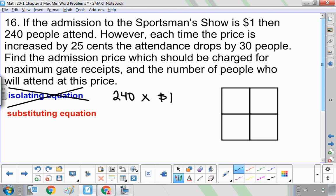However, every time we increase the price by multiples of 25 cents, attendance drops by multiples of 30 people. So attendance is going down, but the people that attend are paying more. So at some point, there's a maximum set price that they should set the admission at.